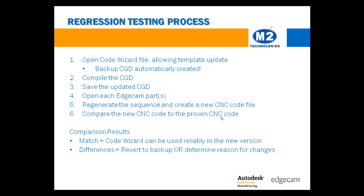The most important thing? Save the entire package in a location where it will be backed up. The process of regression testing is a straightforward method to test for changes when the CodeWizard is updated at a new version. Here's how it works: open the CodeWizard file, allowing the template to update. Compile the CodeWizard file, and then save it. Then, in Edgecam, open each Edgecam part in the regression testing package, regenerate the sequence, and then generate a new CNC code file.